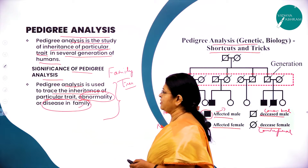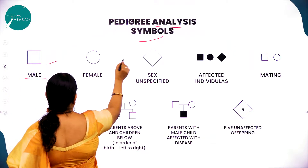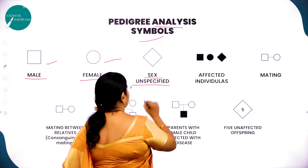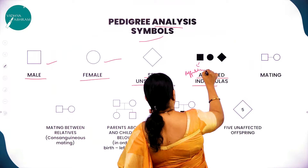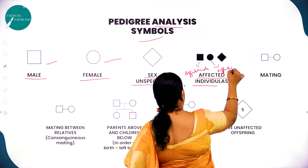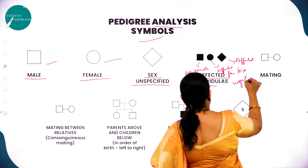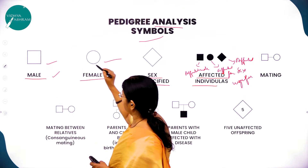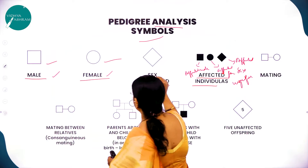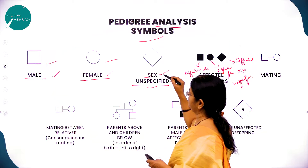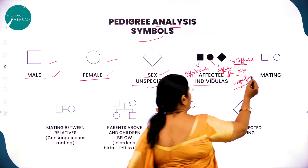These are the symbols used to study pedigree analysis. A square represents male, a circle represents female, and a triangle represents sex unspecified. Affected individuals are shown by shaded symbols: affected male, affected female, and affected sex unspecified.